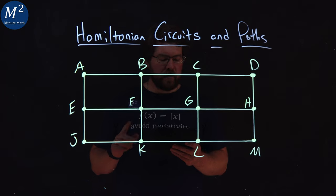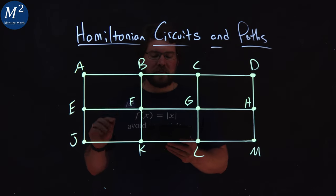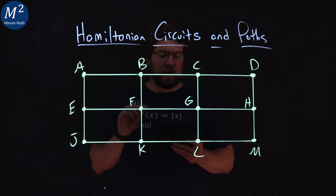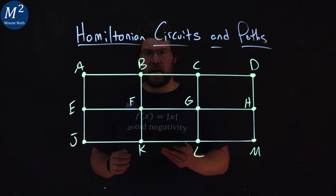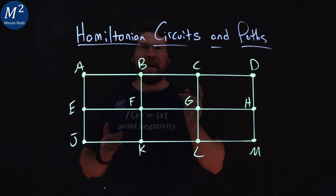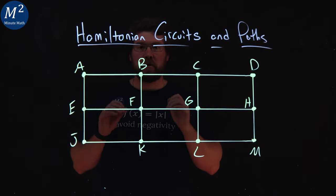A Hamiltonian path also visits every vertex once with no repeats, but does not have to start and end at the same vertex. So let's go find a Hamiltonian path and circuit on this graph.